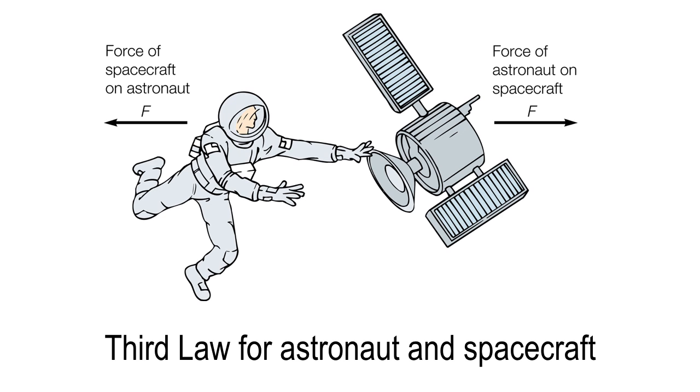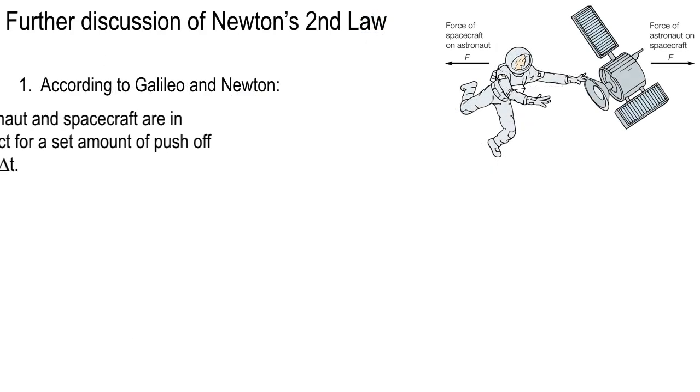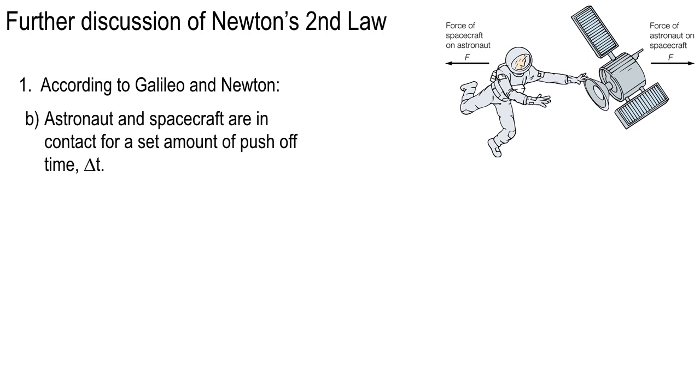Now, we've talked about the third law and Newton's second law and momentum. I want to reinforce that a little bit today using this. This is a diagram from another textbook. It shows an astronaut pushing off of a little tiny spacecraft in space. The force on the spacecraft on the astronaut points off to the left, and the force from the astronaut on the spacecraft points off to the right. And they're the same size. In other words, Newton's third law.